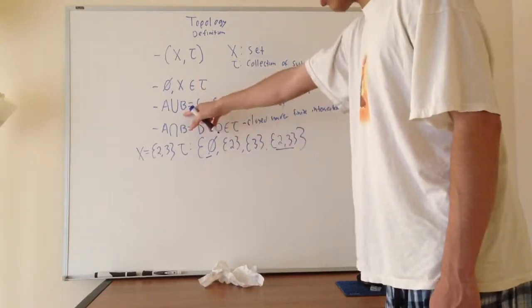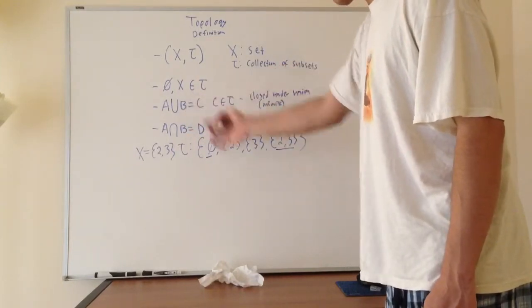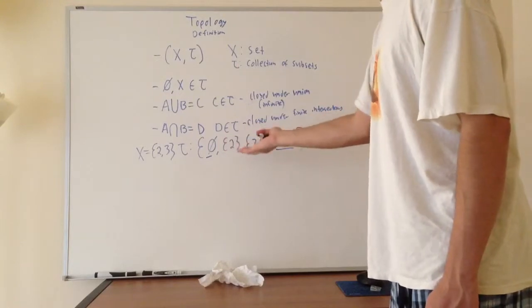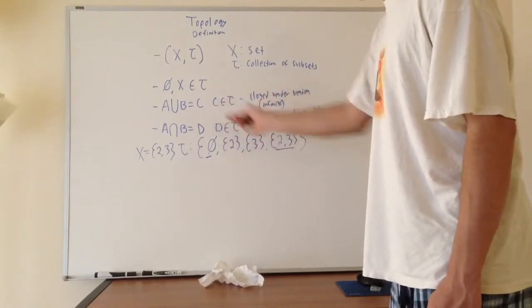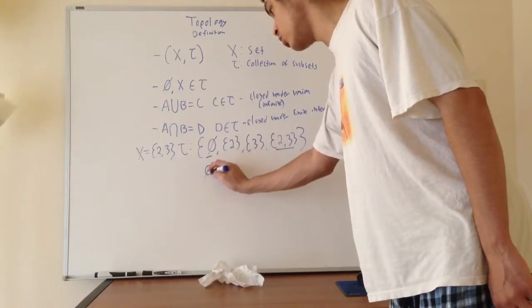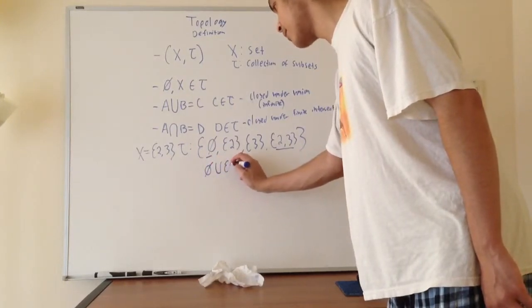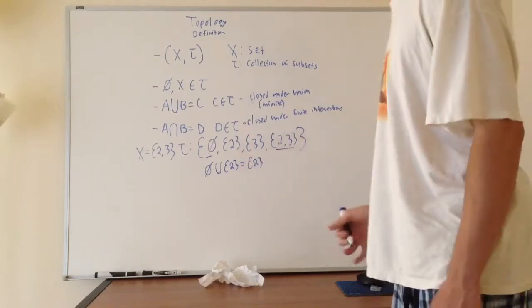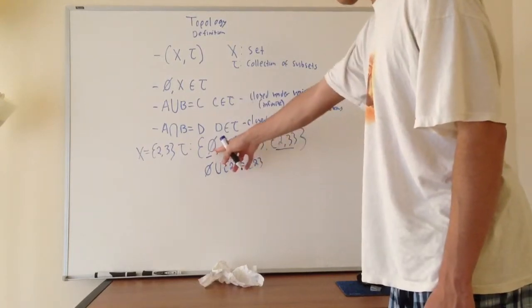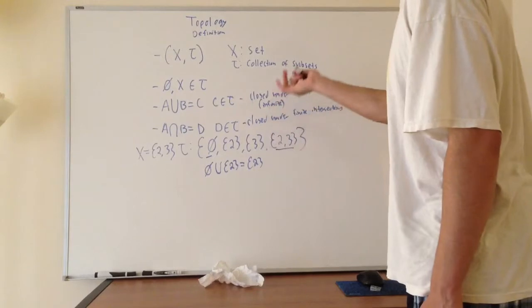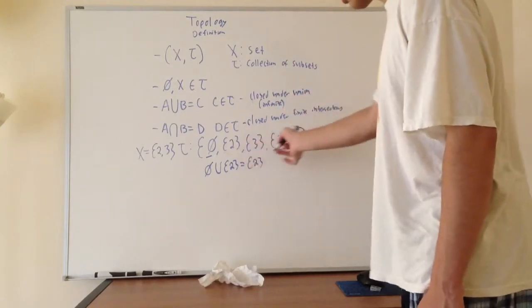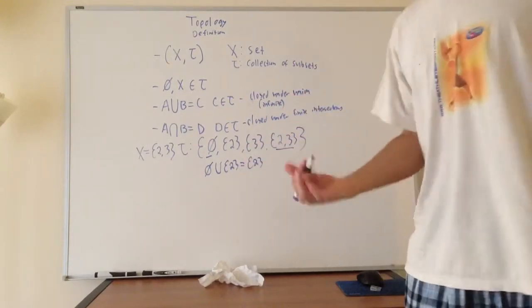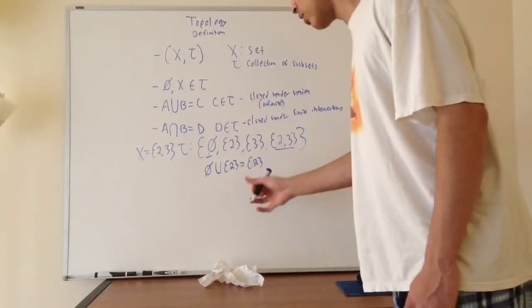Now, for any two subsets inside of here, is the union of them also inside of tau? Well, let's see. Let's suppose we took the union of the empty set and 2. Of course, the union of that would just be 2, and that's of course in there. And of course, the union of the empty set with any set here would just be that set. So for 3 and {2,3}, it's kind of trivial to show that. It's just a basic set theory concept.